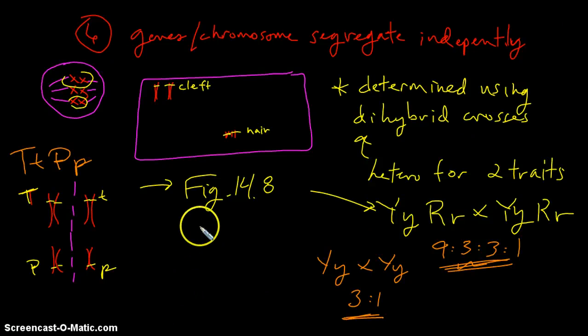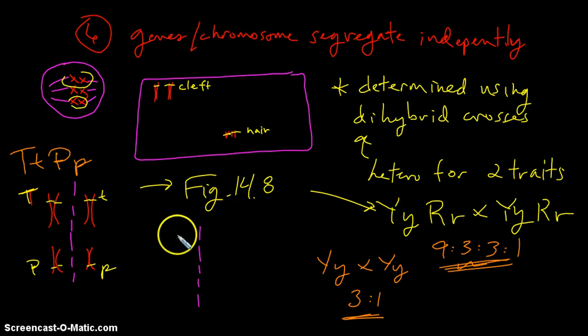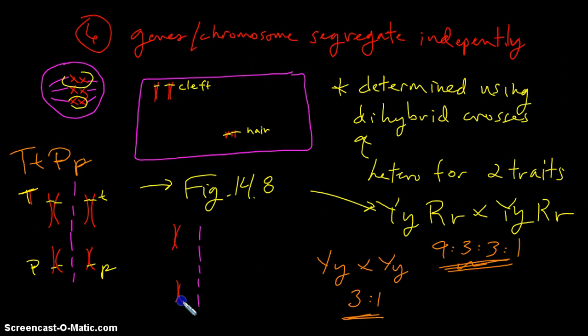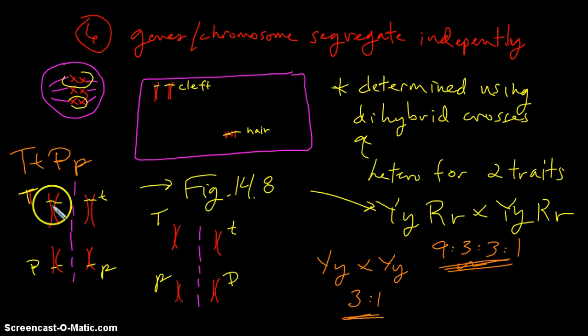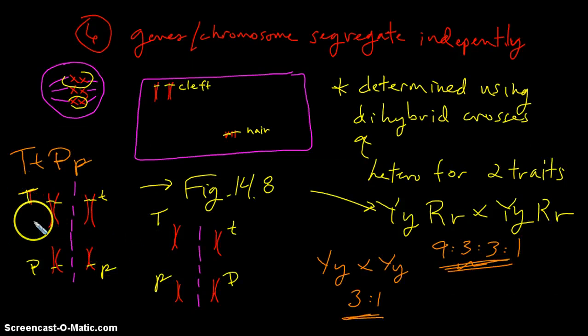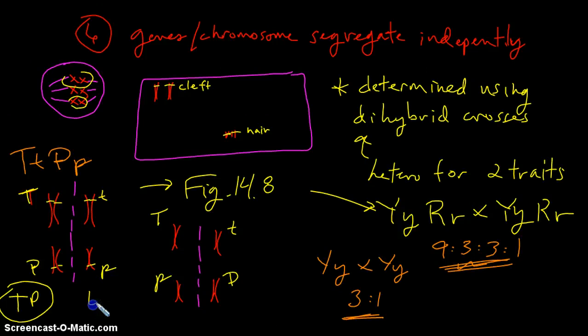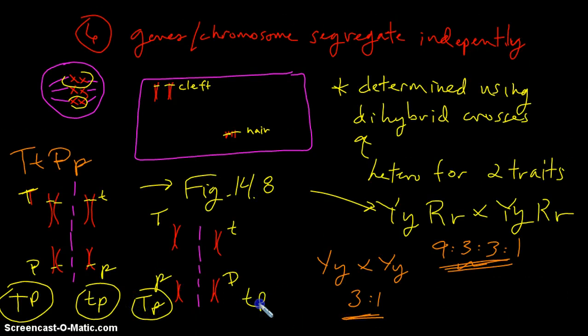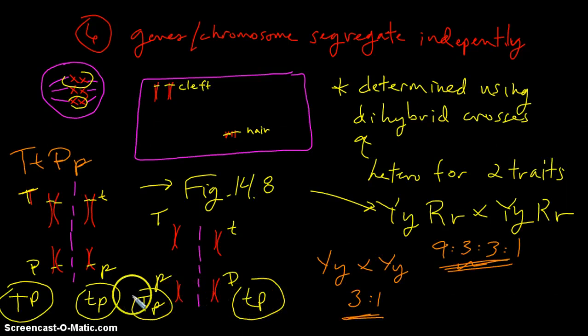So this is certainly a legitimate setup, as would this. You can have the big T and little t lined up as they were, or you can have the p switched positions. So these are both certainly legitimate possibilities in terms of how these align, and what you see is that you get gametes that would have different combinations of genes. For instance, these gametes would get a big T and a big P, these would get a little t and a little p.